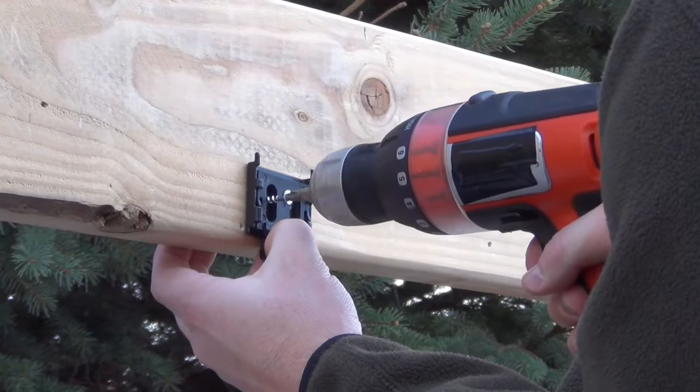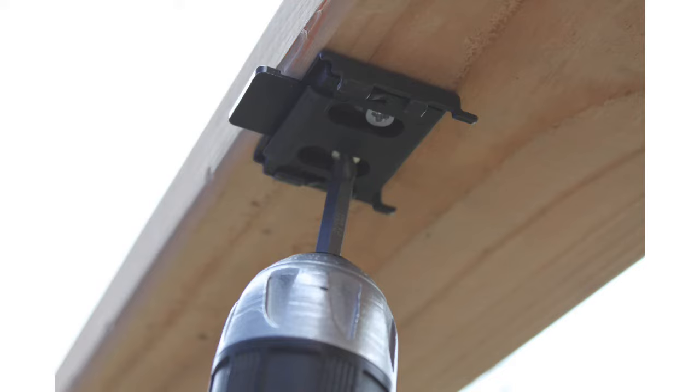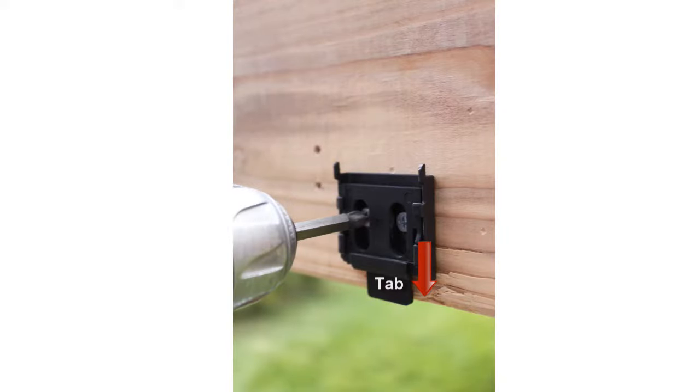Install your valence brackets using two screws per bracket. For ceiling installations, the tabs should point out towards you. For wall installations, the tabs should point down.